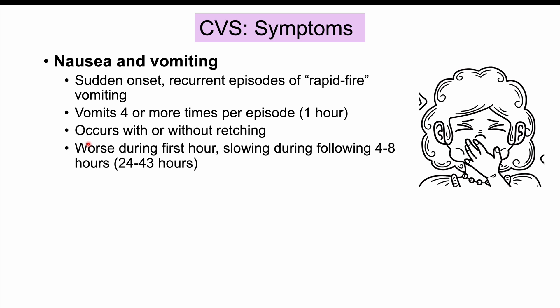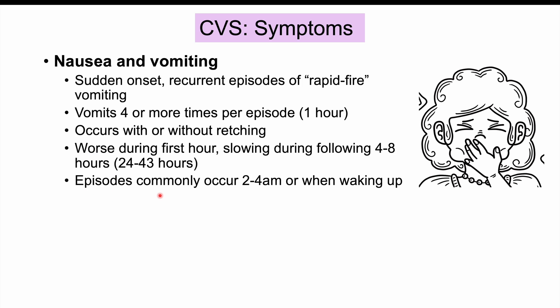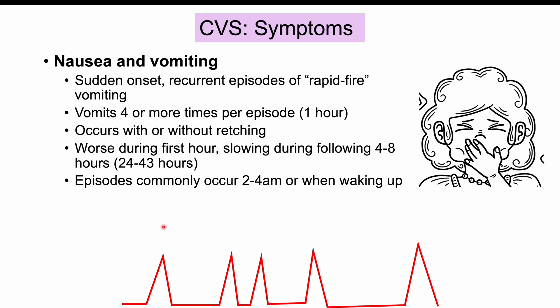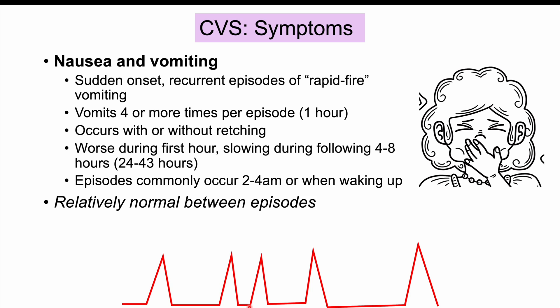Once an episode resolves, patients can feel well enough to eat within about five hours. Generally, patients have relatively normal periods between episodes, then experience a trigger leading to multiple episodes of nausea and vomiting, followed by a return to a normal state. This pattern repeats over time. In some cases, patients may have persistent nausea even between episodes.